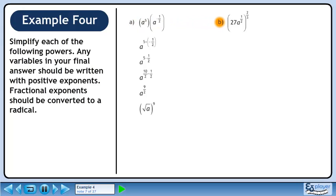Now we'll move on to part b. Raise 27 to the power of 2 over 3 and raise a to the 1 half to the power of 2 over 3 as well. Multiply the fractions in the exponent for a to get 2 over 6. Reduce the fractional exponent of a to get 1 over 3.